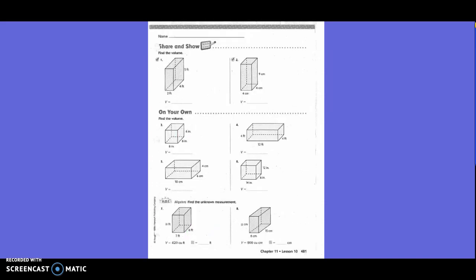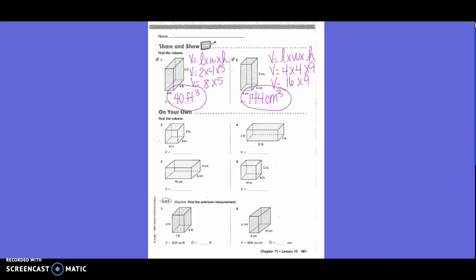Share and show. Find the volume. We're going to write our formula. Volume equals length times width times height. Volume equals 2 times 4 times 5. Volume equals 8 times 5 equals 40. What's my label? Cubic feet or feet cubed. But you have to make sure you put the proper label where it would be incorrect. Number 2. What's my formula? Volume equals length times width times height. Volume equals 4 times 4 times 9. Volume equals 16 times 9 equals 144 cubic centimeters. Make sure you circle your answer. So you guys will do on your own 336 with your partner.